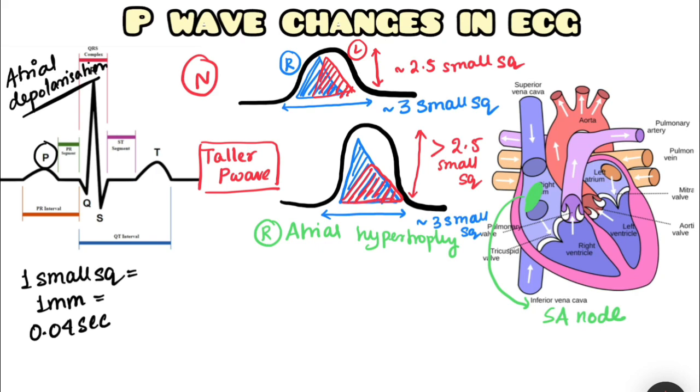The left atrial depolarization remains of normal amplitude. So by that you get a taller P wave.